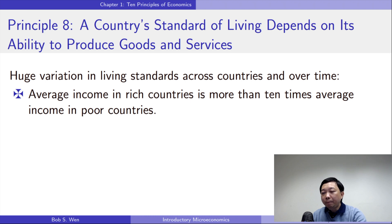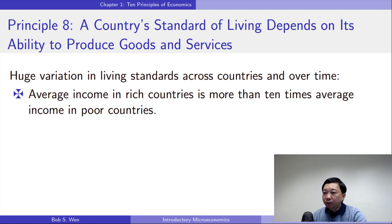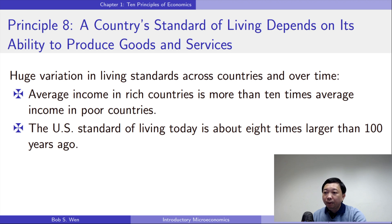According to the World Bank, in 2019, the United States GDP per capita was around 65,000 US dollars. Hong Kong's GDP per capita was 48,000 US dollars, and South Africa's number was around 6,000. The average income in rich countries is more than 10 times the average income in poor countries. Changes in living standards over time are also large — the US standard of living today is about eight times larger than 100 years ago.